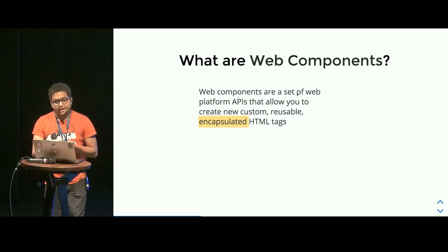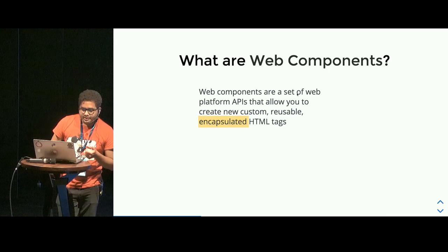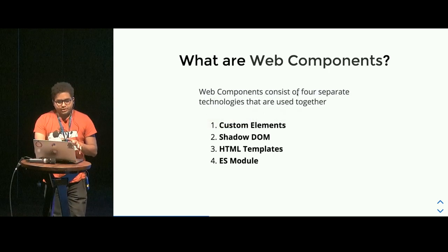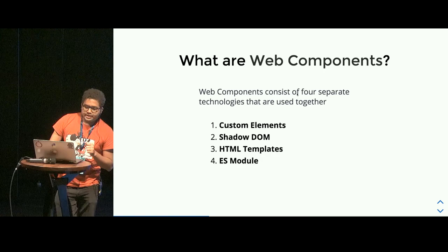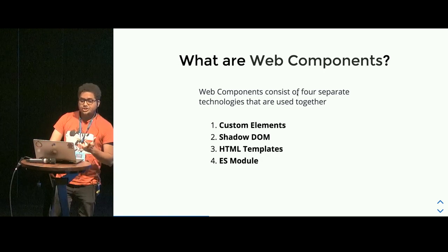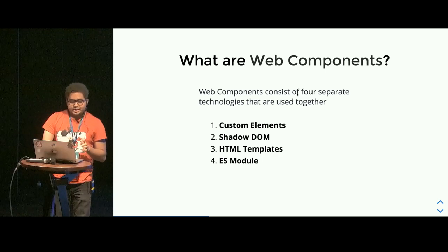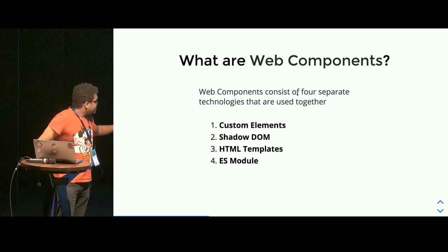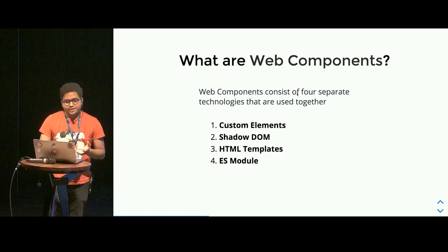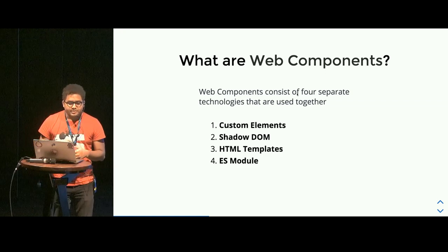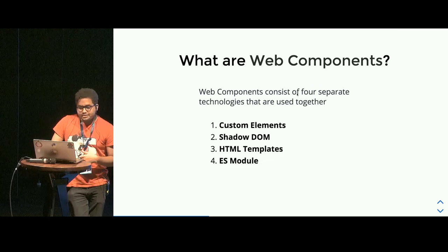In the definition we said it is a set of web APIs. Essentially those are four fundamental things which compose together to be a web component: custom element, shadow DOM, HTML template, and ES module. At least ES modules, we know what that is at this point. And I hope most people already know what templates are.